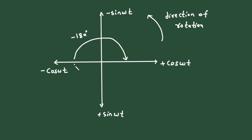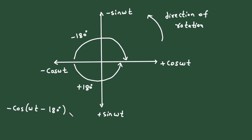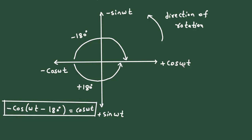We can also go the other way around in the counter-clockwise direction, which gives plus 180 degrees. So we can either add minus 180° or plus 180° to get plus cos(ωt). The formula is: minus cos(ωt) with minus 180° equals cos(ωt), or equivalently minus cos(ωt + 180°) equals cos(ωt). Both are correct.